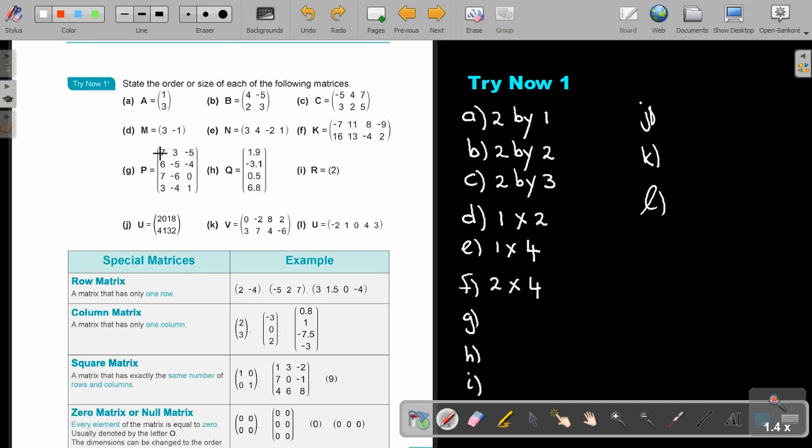Number G. How many rows? One, two, three, four. And how many columns? One, two, three.